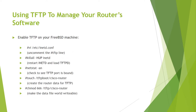Using TFTP to manage your router software. Enable TFTP on your BSD machine. Edit /etc/inetd.conf. Uncomment the TFTP line. Kill all inetd processes. Start inetd and load TFTPD. Run netstat -n to check that TFTP is bound. Touch /tftpboot/cisco-router. Trade the router data file for TFTP. Run chmod 666 /tftp/cisco-router.